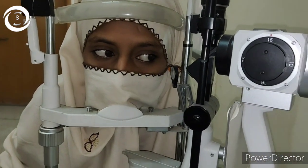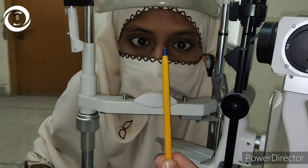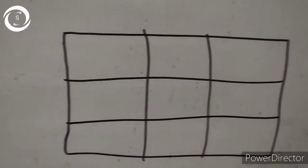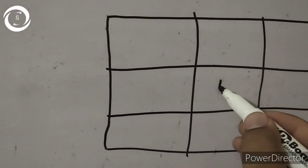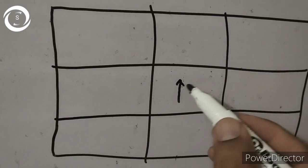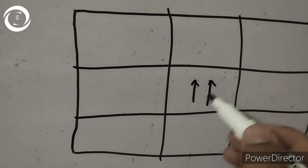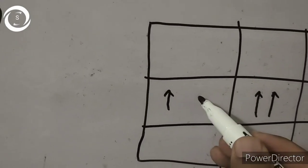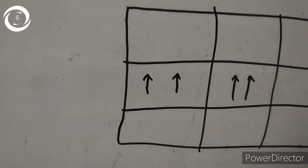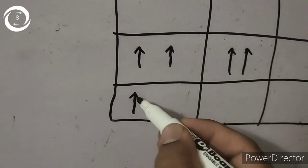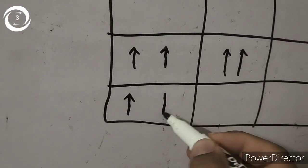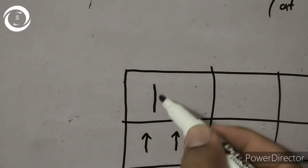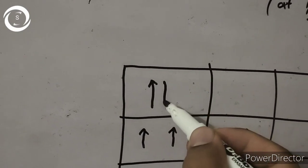Once again I am showing you the right sixth nerve paralysis. Now we will plot the findings of this patient and you will see how to plot the diplopia chart. In primary position there is horizontal diplopia, so you draw two arrows alongside. In the right gaze the separation increased, and in the right and down gaze the separation was maximum — so we show the maximum distance between the two in the right and down position.